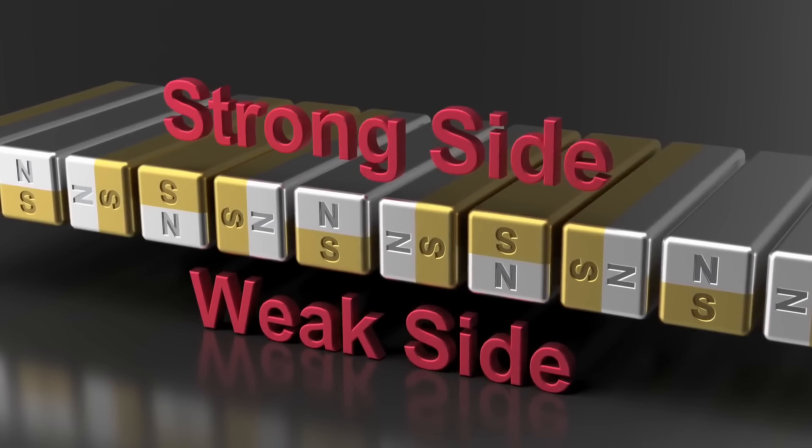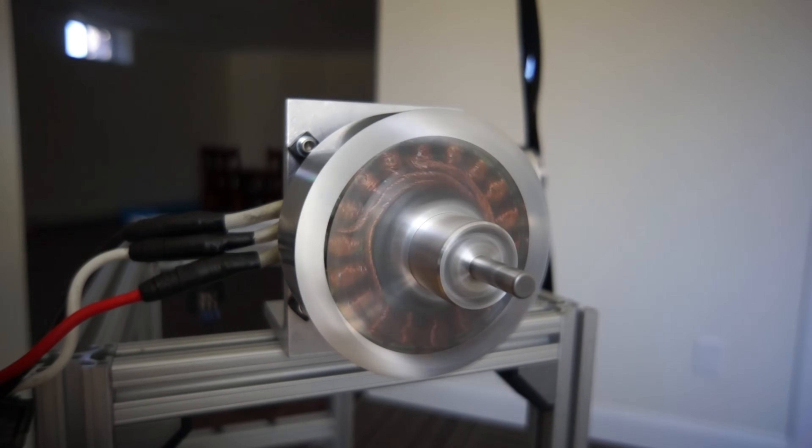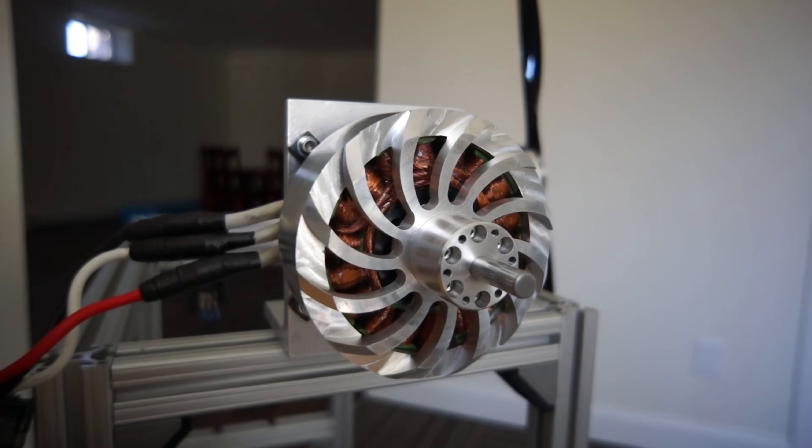This allows for a stronger magnetic field on one side without any loss on the other. Different types of Hallback Arrays exist, including linear, circular, and volumetric configurations. This concept has evolved into permanent magnet synchronous motors, which incorporate Hallback stators.